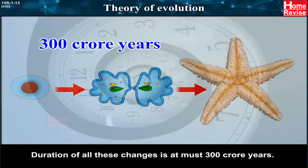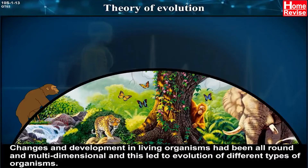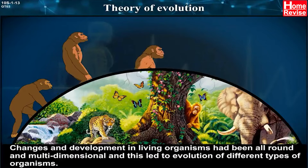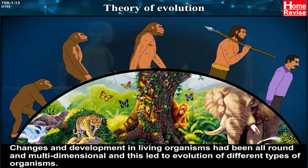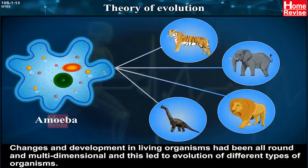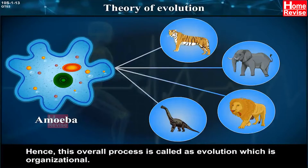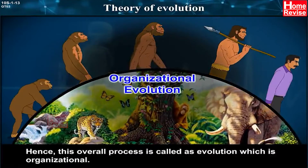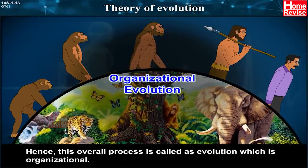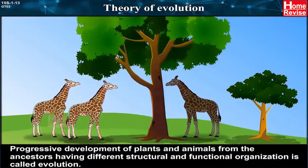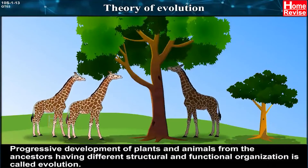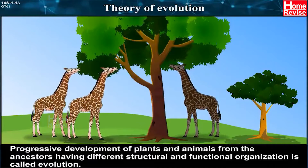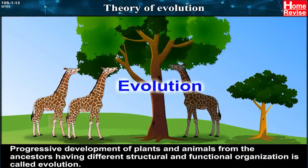The duration of all these changes is almost 300 crore years. Changes and development in living organisms have been all-round and multidimensional, and this led to the evolution of different types of organisms. This overall process is called evolution, which is organisational. Progressive development of plants and animals from ancestors having different structural and functional organisation is called evolution.